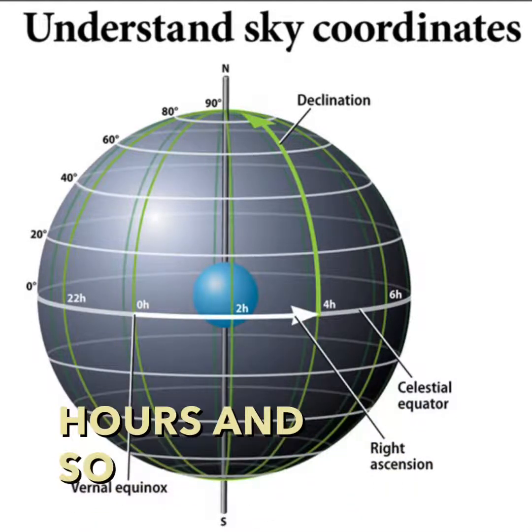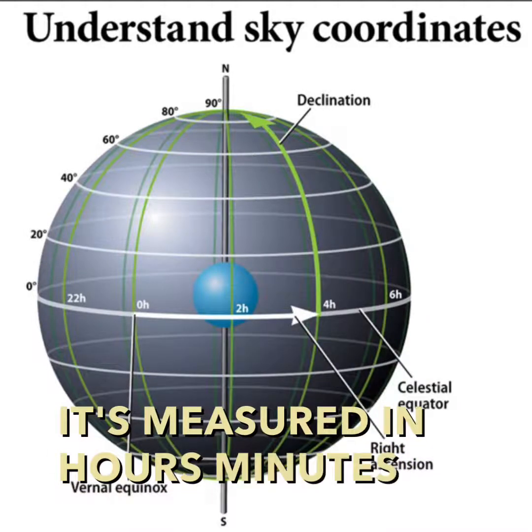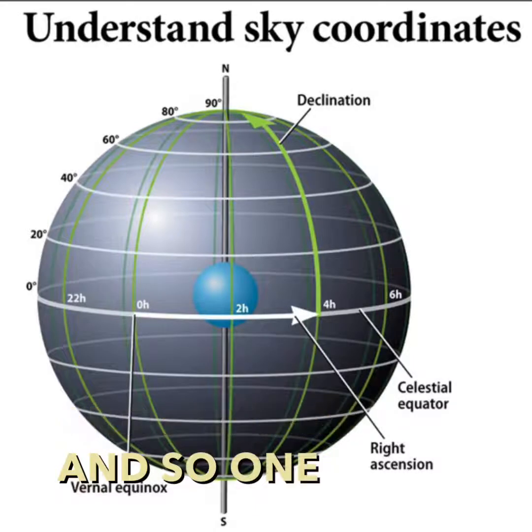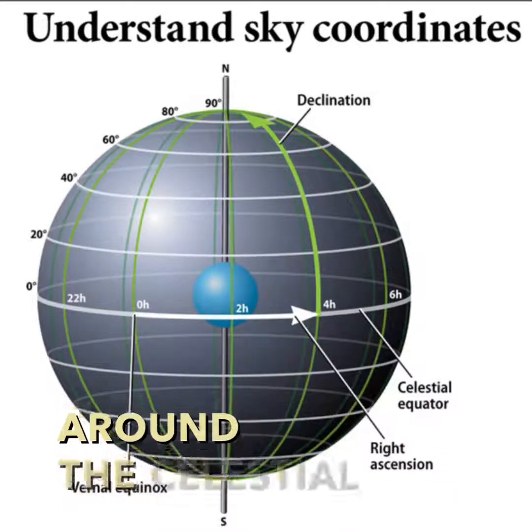And so it's measured in hours, minutes, and seconds. And so one hour is actually 15 degrees around the celestial sphere.